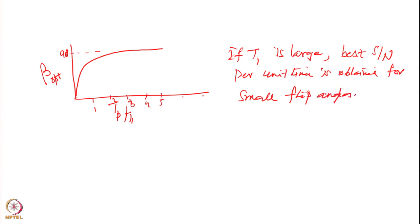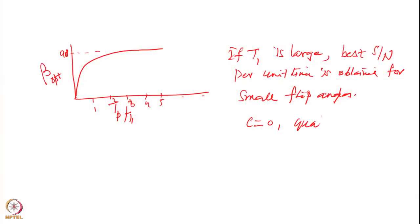This is typically the case for carbon-13. Carbon-13 relaxation times are very long. For example, carbonyl carbons have very long relaxation times because no proton is attached to them. Similarly, quaternary carbons have very long relaxation times. In such situations, if T₁ is large, the best signal-to-noise per unit time is obtained for small flip angles. We use a very small flip angle for carbonyls or quaternary carbons.